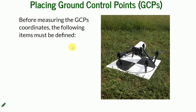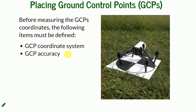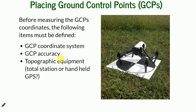Before you even measure, you need to define the coordinate system and know what accuracy is needed for the ground control points. Some GPS receivers, like those in phones or simple handheld GPS units, can have accuracy of just a couple of meters, which is not enough for high-resolution mapping. You need to know what kind of device to use for your GCP survey — some handheld GPS units measure with high accuracy and can be sufficient, or you may need more sophisticated equipment like a total station.